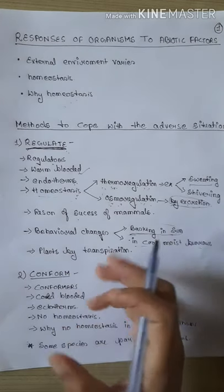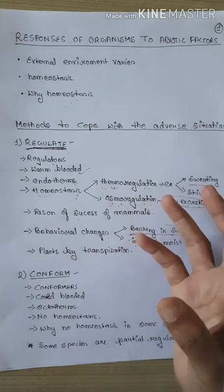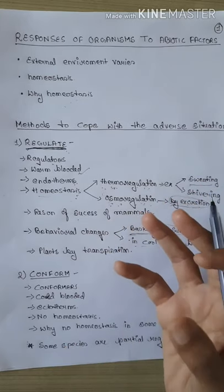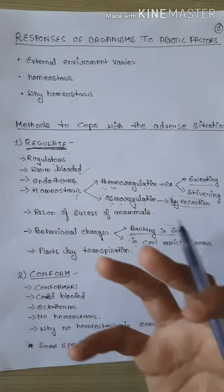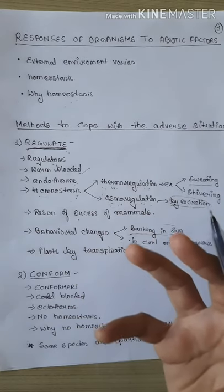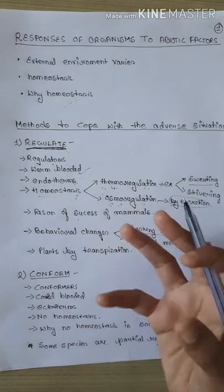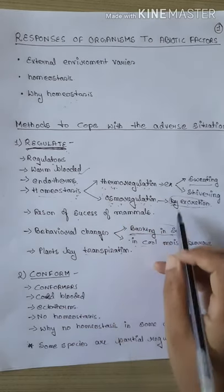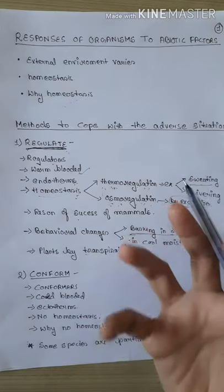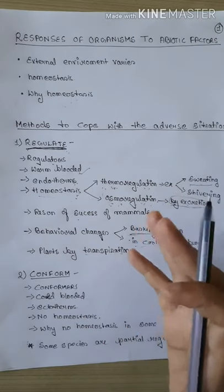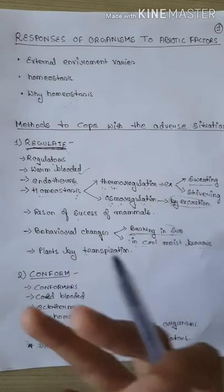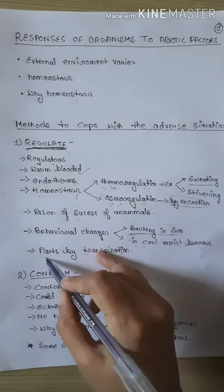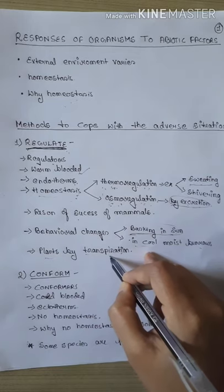Ab plants kya karte hain? Plants ke saath kya hai ki yeh apni body temperature zyaada had tak regulate nahi kar sakte. Magar phir bhi apne jo plant ke parts hain unko thanda rakhne ke liye ek process zaroor hai, aur woh hai transpiration. Jaise humein garmi hoti hai to sweating hoti hai — hamaari body se paani bahar aata hai jiske wajah se humara body temperature thanda ho jaata hai. Kuch waisa hi process transpiration bhi hai jo plants ko bahut zyaada garmi mein apne leaves ki surface ko thanda rakhne mein help karta hai.